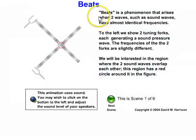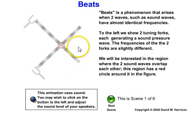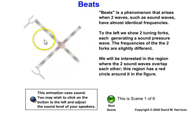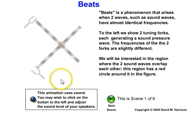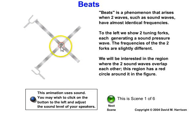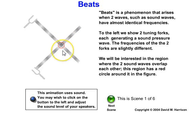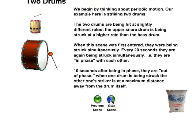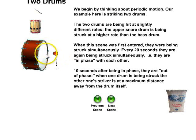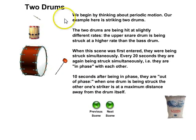Beats is a phenomenon that arises when two waves, such as sound waves, have almost identical but not exactly the same frequencies. Here are two tuning forks, each generating a sound pressure wave, with slightly different frequencies. We're interested in the region where the two sound waves overlap. Think of it like two drums being hit at slightly different rates — the upper snare drum is struck at a higher frequency than the bass drum.